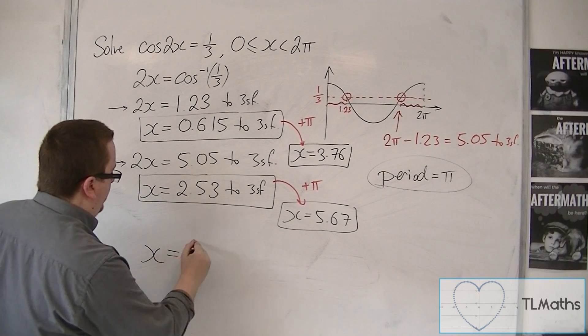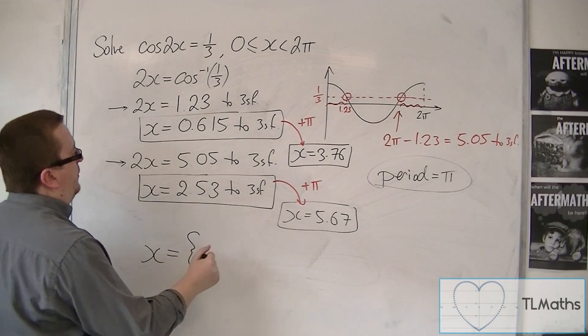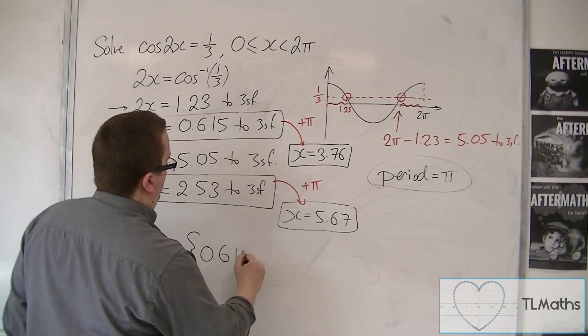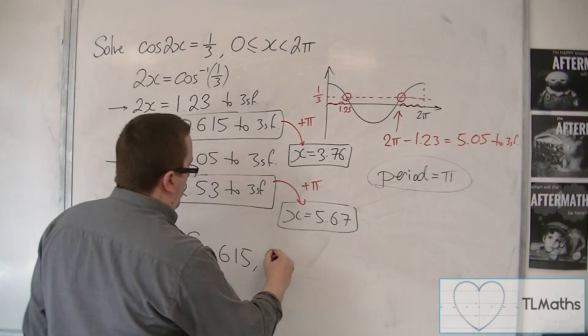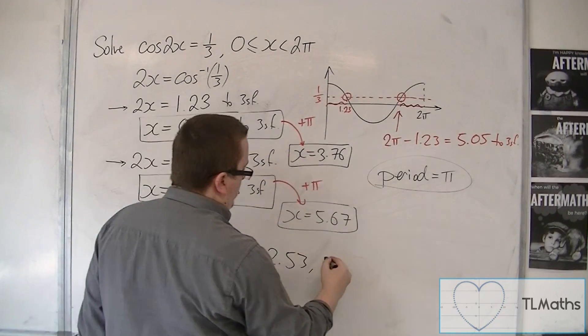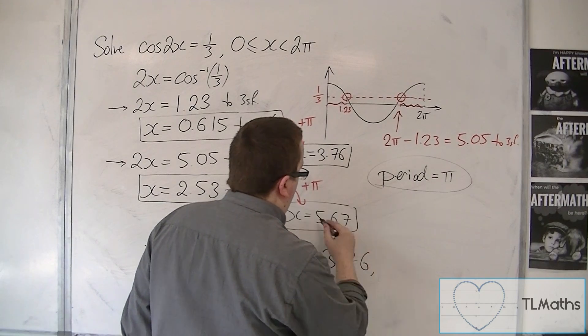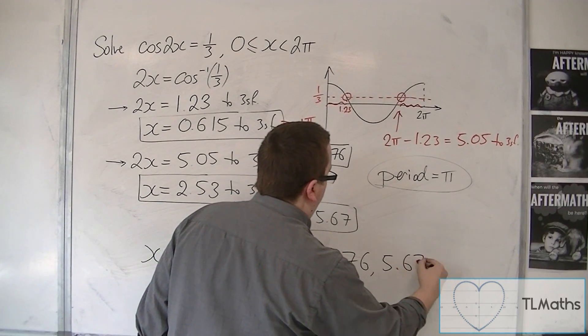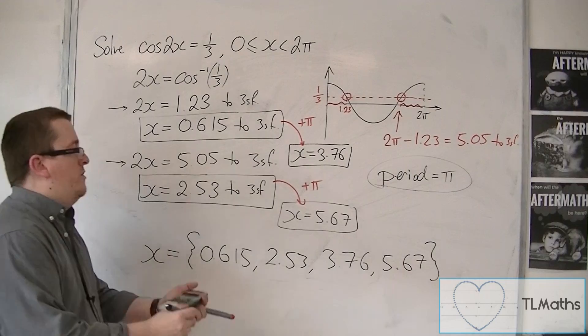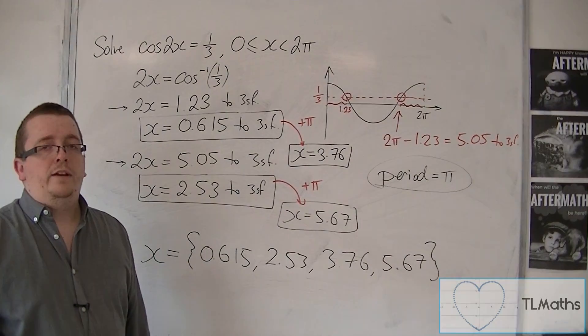So our four answers can be written as x equals 0.615. We've got 2.53. We've got 3.76. And 5.67. And they are our four answers to three significant figures.